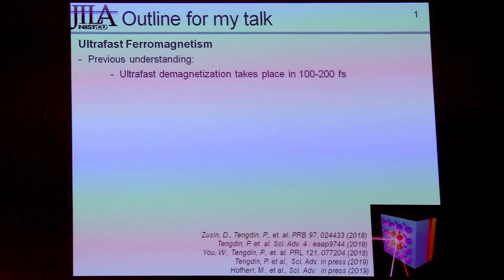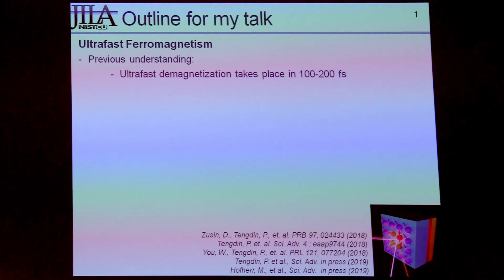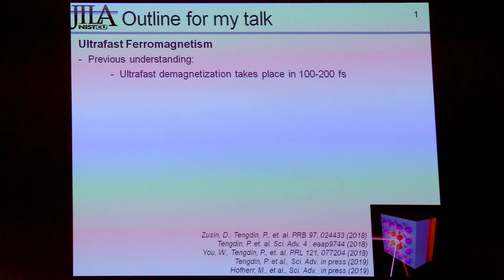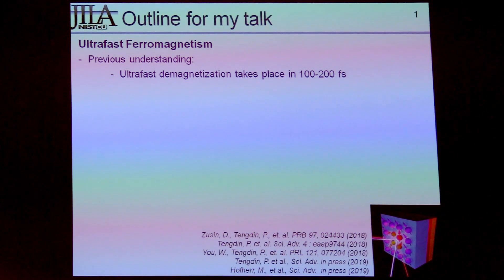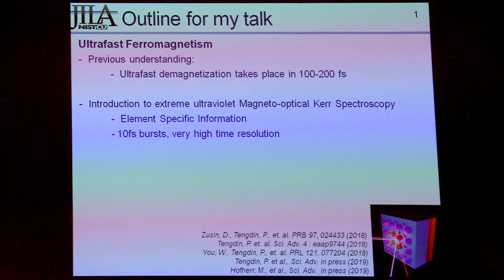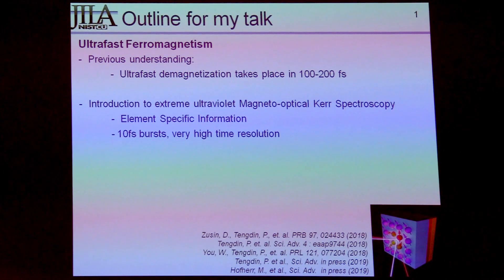This is a brief introduction and outline for what I'm going to talk about. To begin with, I'm going to give you a little bit of background of the field of what people call ultrafast demagnetization — laser-induced dynamics in ferromagnets. Then I'm going to give you an introduction to what people have been doing for the last 20 years, and then talk about what is the new thing that we're looking at now. In order to do that, I'm going to give you an introduction to my experimental technique.